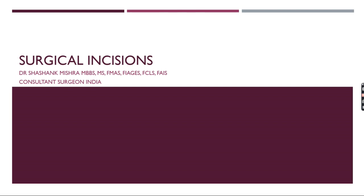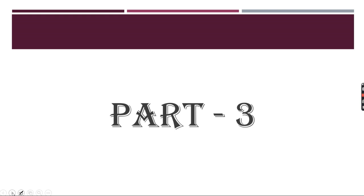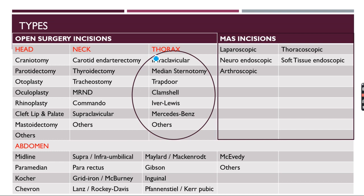Welcome back. In this third part, we have already finished the various incisions given over the abdominal area in Part 2A and 2B. Now this is the third part and we are going to discuss the various incisions used in cases of the thoracic area — the infraclavicular incision, median sternotomy, trapdoor, clamshell, Ivor Lewis, Mercedes Benz incision, and others, including sub-areolar or inframammary incision for breast.